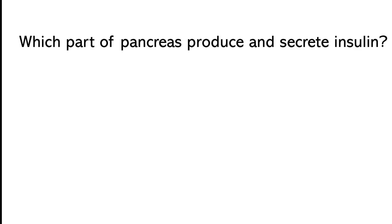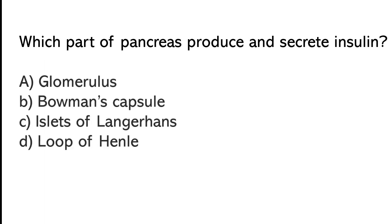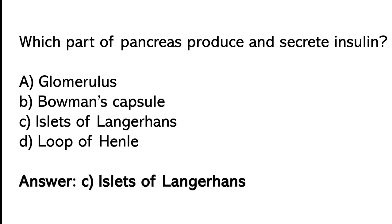Which part of the pancreas produces and secretes insulin? Glomerulus, Bowman's capsule, islets of Langerhans, or loop of Henle. The correct answer is option C — islets of Langerhans.